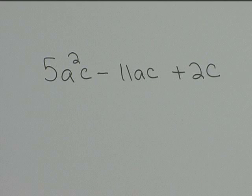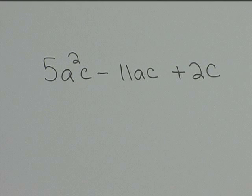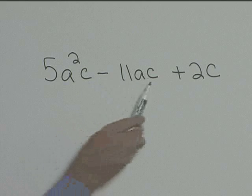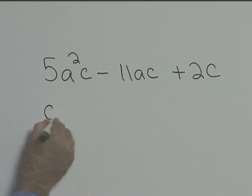Let's factor the polynomial 5a²c - 11ac + 2c. First, let's see if we have a common factor in each term. We'll notice that we have a c, so let's factor out c.